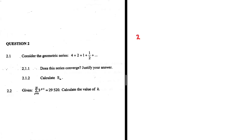Let's do 2.1.1. Consider the geometric series 4 plus 2 plus 1 plus a half. Does the series converge? Justify your answer. The prerequisite for a series to converge is that r must be between minus 1 and 1.